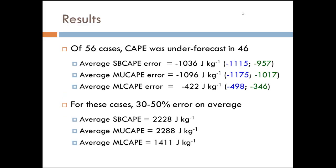Out of those 56 cases, CAPE was underforecast in 46 of them. The average surface-based CAPE error was over 1,000 joules per kilogram too low. These numbers are for those 46 cases, because we had a few that were completely overestimated — and if you get a case where the observed was 4,000 joules per kilogram and the RAP was forecasting 6,000, it's going to completely throw off your numbers. Overall we're looking at a 30 to 50 percent error on average for those 46 underestimated cases.